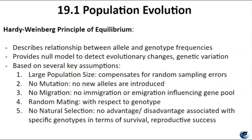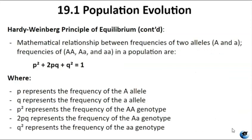The Hardy-Weinberg Principle, also known as the Hardy-Weinberg Equilibrium or Hardy-Weinberg Law, is a fundamental concept in population genetics. It describes the relationship between allele and genotype frequencies in a population under certain idealized conditions. The principle provides a null model against which real-world populations can be compared to detect evolutionary changes and understand factors influencing genetic variation. Essentially, if a population is in Hardy-Weinberg equilibrium, nothing is changing — natural selection is not acting upon that population.